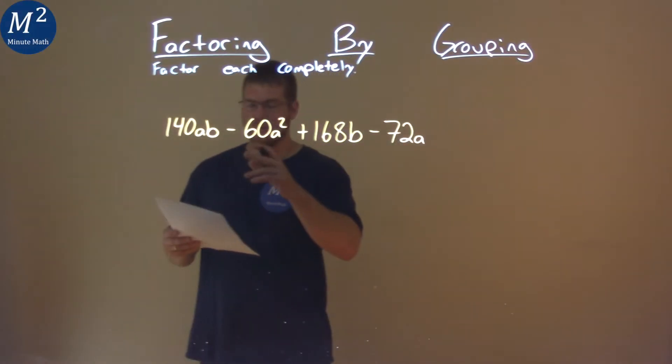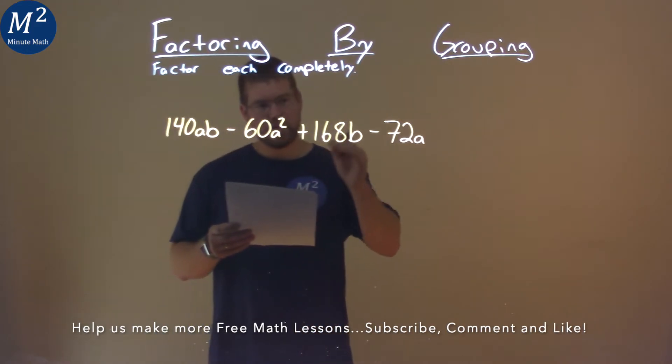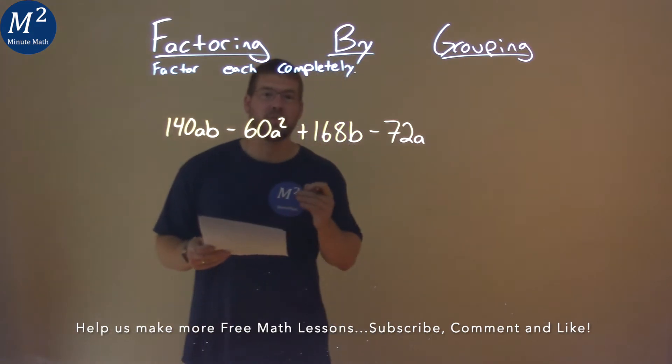We're given this problem right here, 140ab minus 60a squared plus 168b minus 72a, and we need to factor this completely.